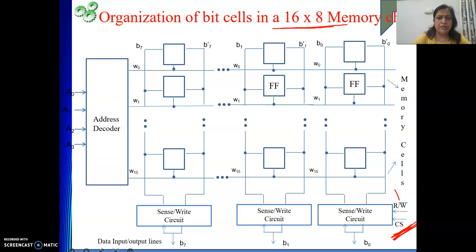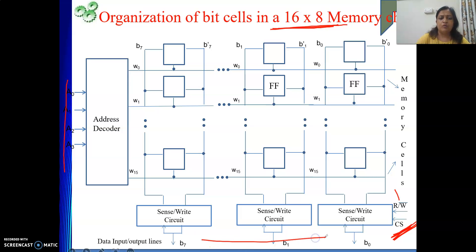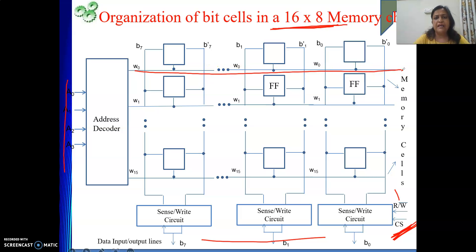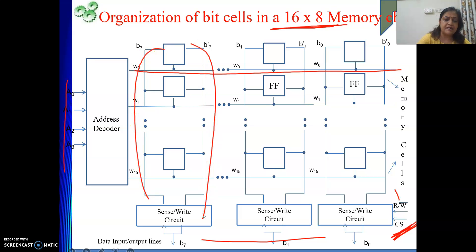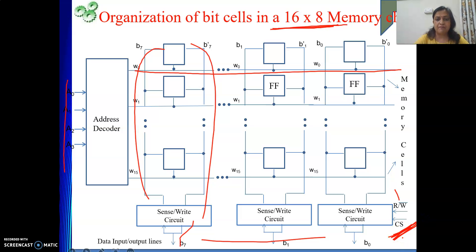To summarize: in a 16 by 8 memory chip, there are 16 rows. To select them, we have 4 address bits and 8 data bits. Whichever row is selected, all flip-flops in that row will be enabled. For a read operation, values come from the bit lines to the sense-write circuit, which gives the appropriate value on the data lines. The reverse happens for a write operation. The chip select line is used in a multi-chip environment.